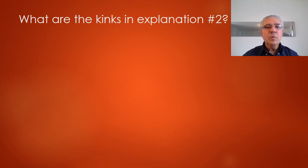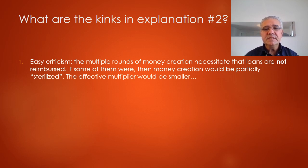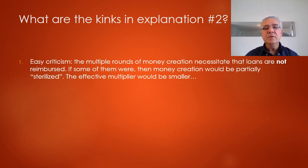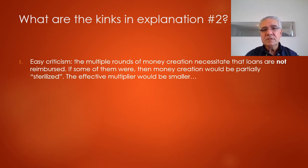So what are the kinks in this explanation? An easy criticism is that these multiple rounds of money creation can go on as long as loans are not being repaid. If they were being repaid, money creation would stop at that point, the whole series of money creation would be partially sterilized, and the effective money multiplier would be smaller.